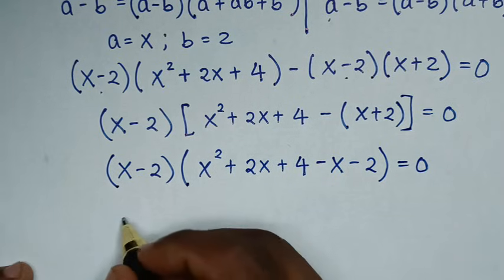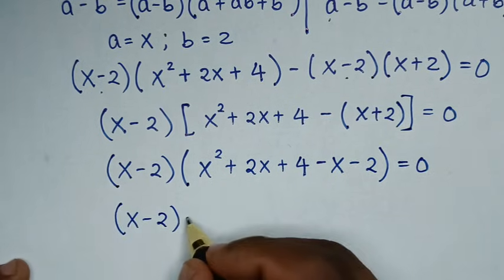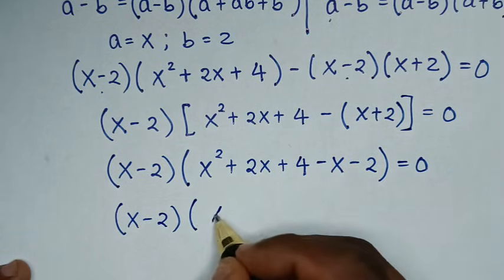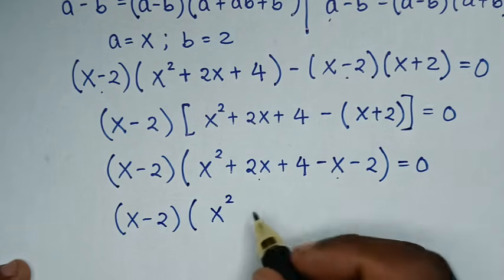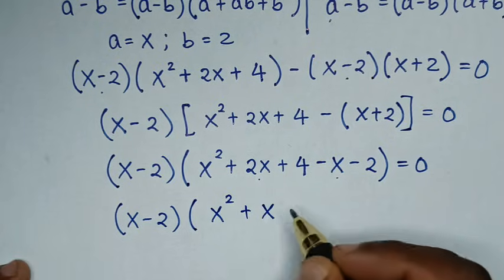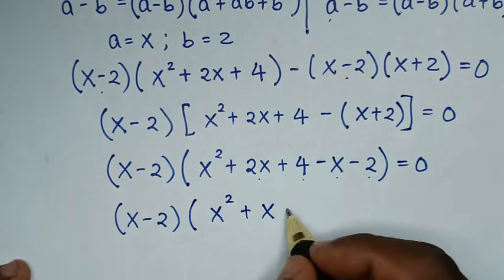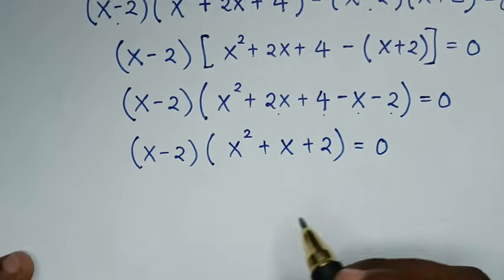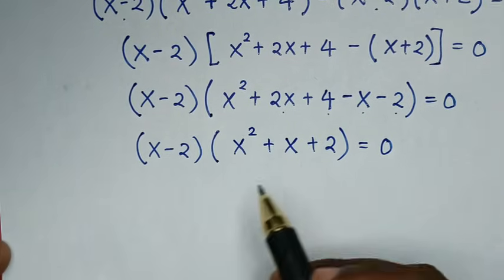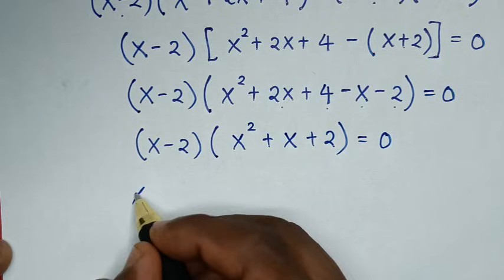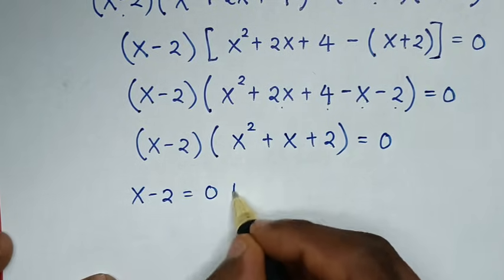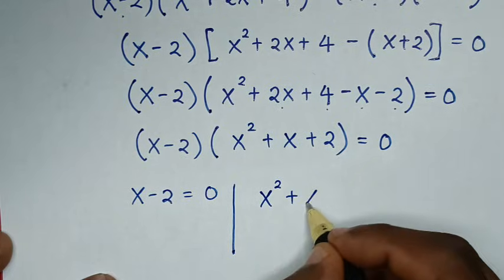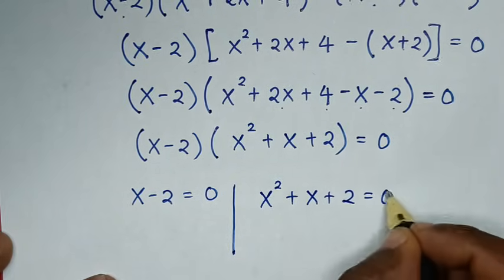Collecting like terms inside the bracket: x squared, then 2x minus x gives plus x, then 4 minus 2 gives plus 2. So the equation becomes: (x minus 2)(x squared plus x plus 2) equals 0. From here we have two solutions: x minus 2 equals 0, and x squared plus x plus 2 equals 0.